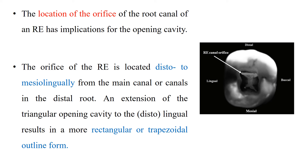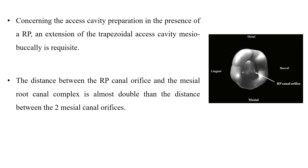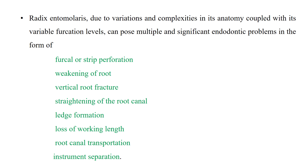The orifice of radix entomolaris is located distolingual to mesiolingual from the main canal in the distal root. Extending the triangular access cavity to the distolingual results in a more rectangular or trapezoidal outline form. For radix paramolaris, extend the trapezoidal access cavity mesiobuccally to find its orifice. The distance between the radix paramolaris canal orifice and the mesial root canal complex is almost double the distance between the two mesial canal orifices.